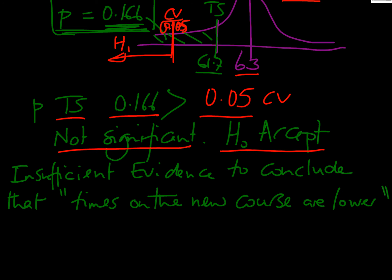If we start writing this up, the probability of our test statistic is 0.166, which is greater than the critical value of 0.05. So it's not significant. H0 is accepted. Using the wording for S2, we'd write insufficient evidence to conclude that, and then lift the figure out, the thing they asked us to test, which is that the times on the new course are lower. Answered the question.